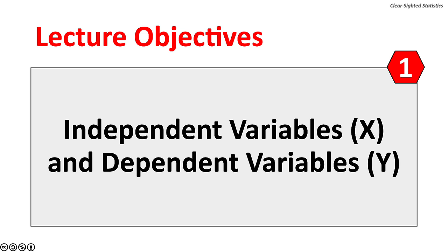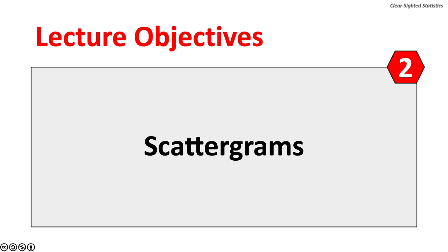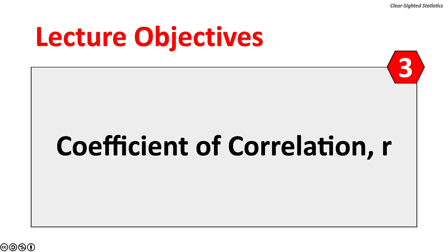This lecture has nine objectives. First, you will understand the difference between independent variables, X, and dependent variables, Y. Second, you will learn how to interpret scattergrams, also called scatter diagrams. Third, the calculation and interpretation of the Coefficient of Correlation, or R, will be reviewed.